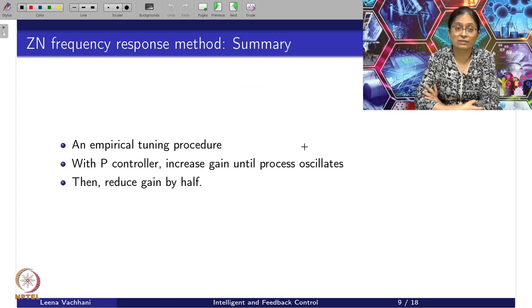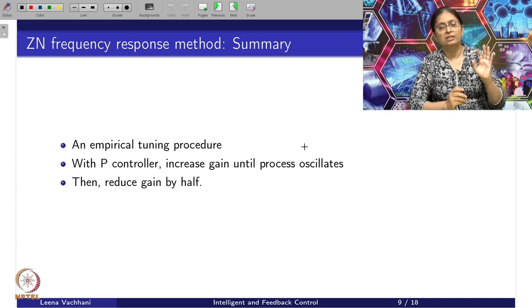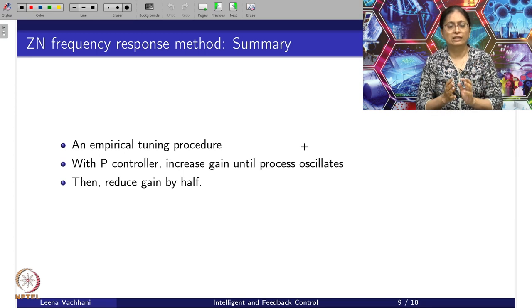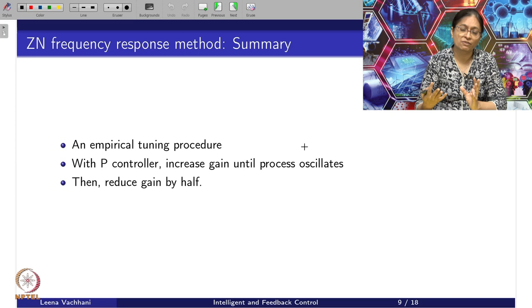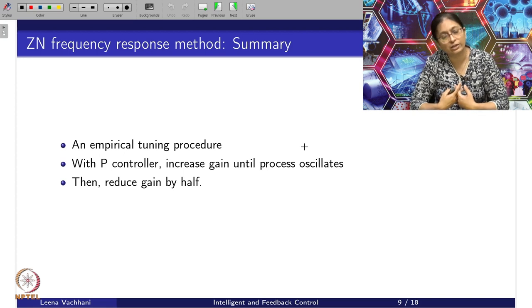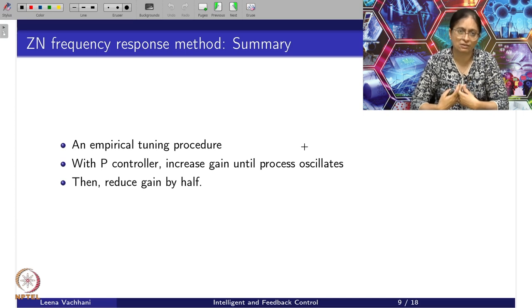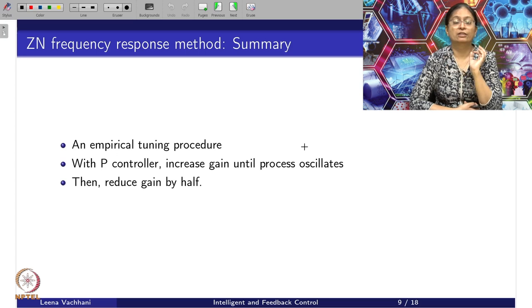To summarize the ZN frequency response method: it is an empirical tuning procedure. Experimentally, you can get the ultimate point very easily. How do we get the ultimate gain? We simply apply the P controller and increase the gain until we get sustained oscillations. Getting those sustained oscillations is a reliable idea because we do not introduce errors. With those oscillations, we can also get ωu — the ultimate frequency — and then we reduce the gain by half. So errors are not introduced, which is the strongest point of this ZN frequency method.